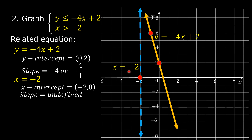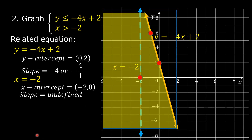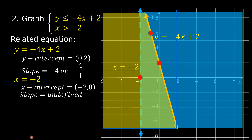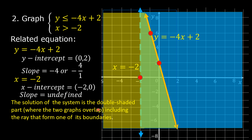Let us now do the shading. The symbol of inequality in the first linear inequality is less than or equal to, so we are going to shade below the line of y is equal to negative 4x plus 2. Since the symbol of inequality in the second linear inequality is greater than, then we are going to shade to the right of this dashed line. The solution of the system is the double-shaded part — this double-shaded part where the two graphs overlap, including the ray that forms one of its boundaries.